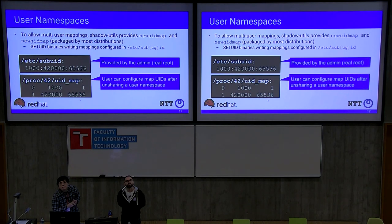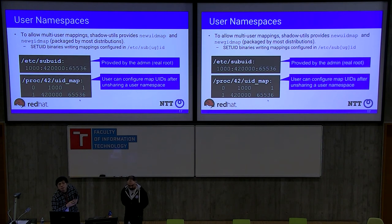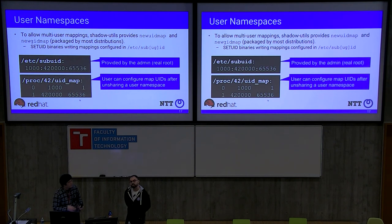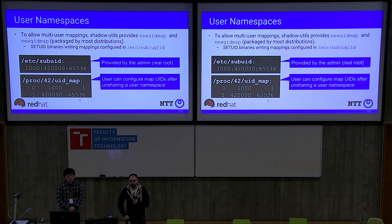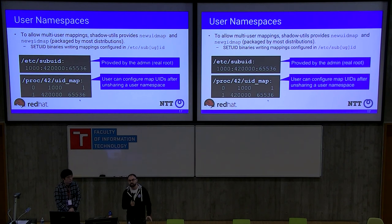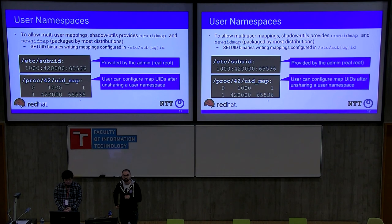Second question: do you have performance comparisons between rootless containers and normal containers? The question is whether we benchmarked fuse-overlayfs. We don't have specific numbers for that — I did some tests like building containers and it takes about the same time. I would expect fuse to add some extra cost but we have no numbers yet.